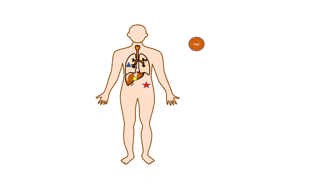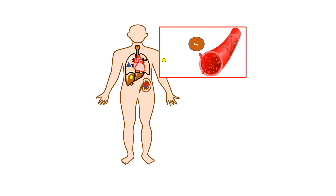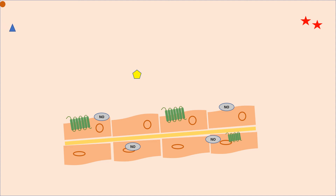The system begins with a decrease in blood pressure and blood volume. Angiotensinogen, available in the liver, is released, and renin from the kidney cleaves angiotensinogen to produce angiotensin 1. All further conversion of angiotensin is carried out by ACE, angiotensin converting enzyme, predominantly available in the lungs. ACE converts inactive angiotensin 1 into the vasoactive peptide angiotensin 2, with release of nitric oxide from smooth muscle cells.